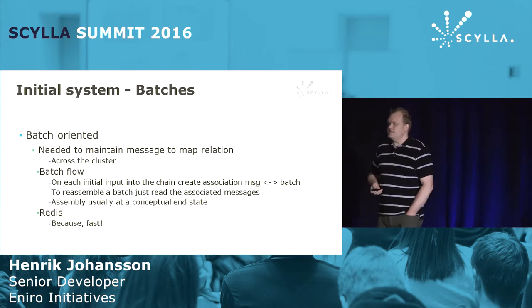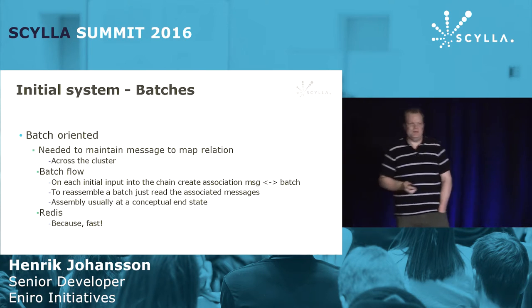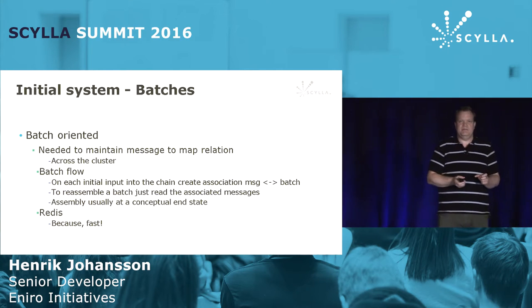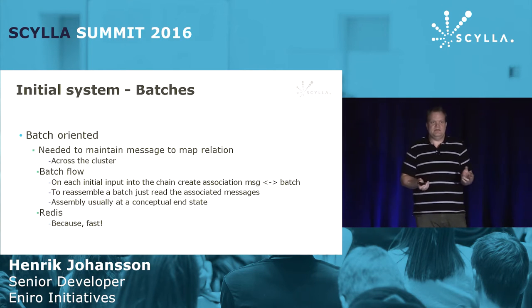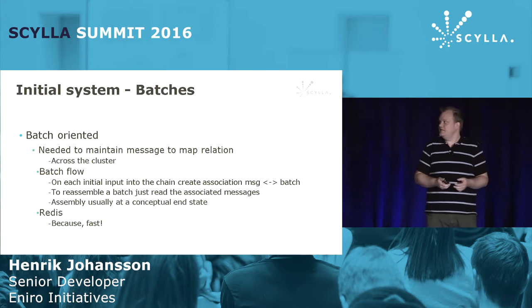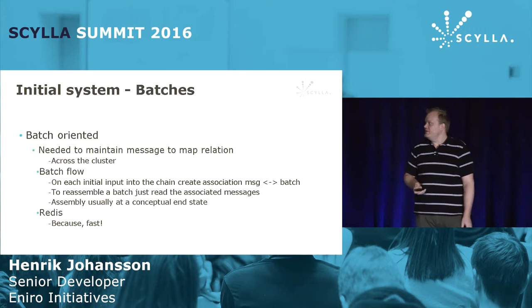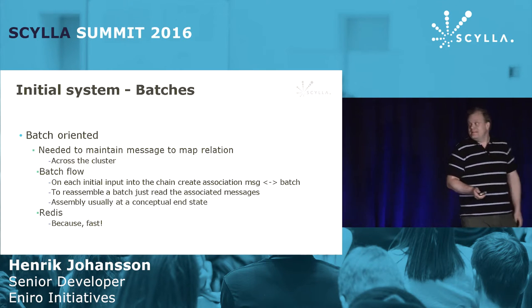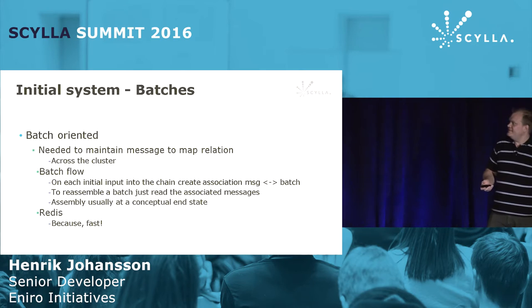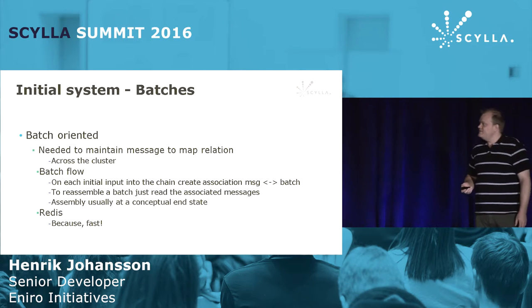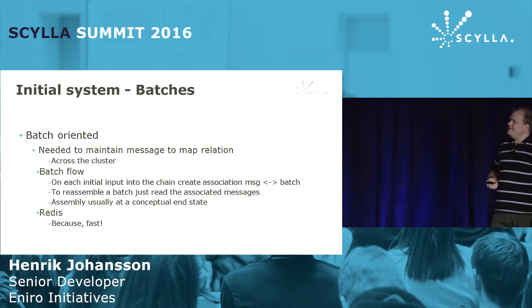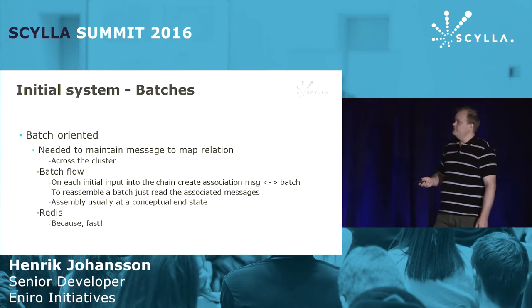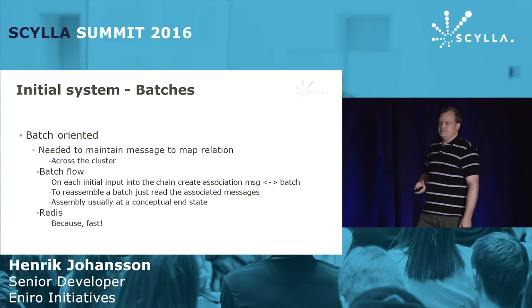The batch orientation is just a simple mapping between a message and its corresponding batch — sounds simple enough. And conceptually it really is that simple. So how did we do this? We used Redis, of course, because that's what it does.